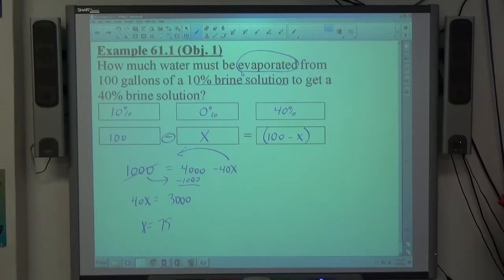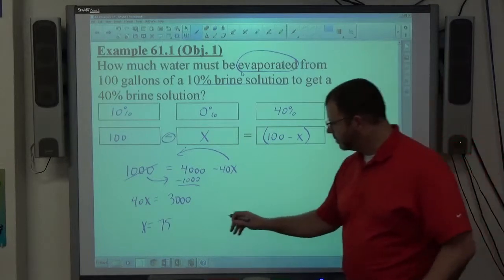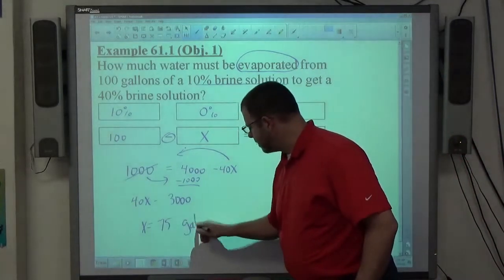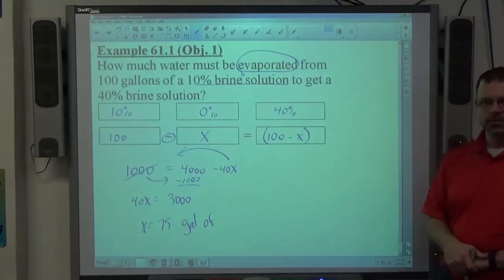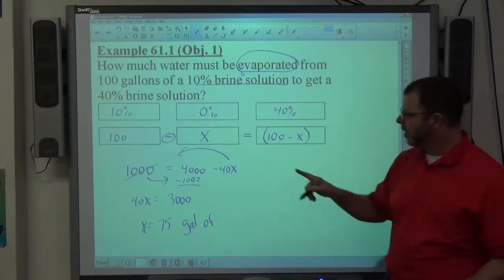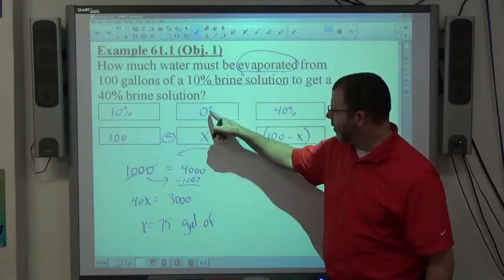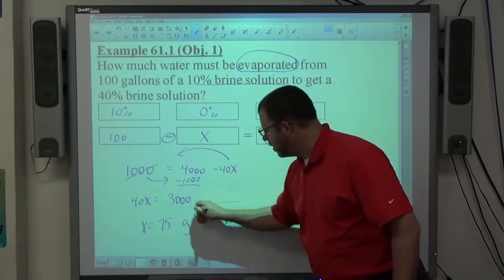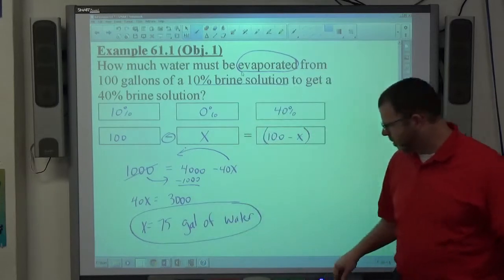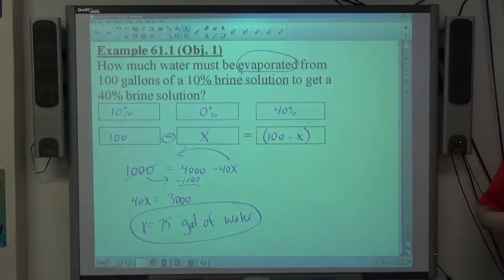Now, what unit should go on that? Gallons. And what substance is that? We're on water. We're evaporating water. X is right here, X is the water, right? 75 gallons of water need to be evaporated from the solution to end up with a 40% brine solution.